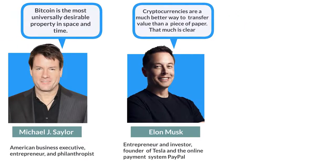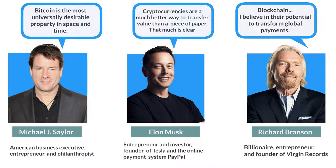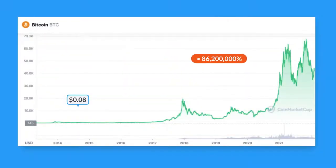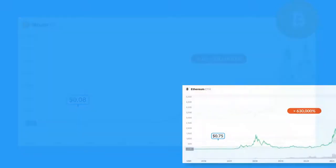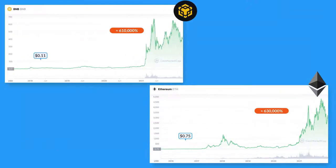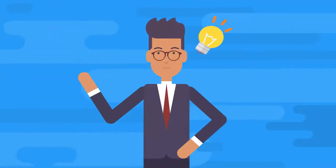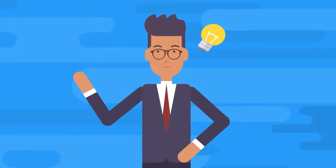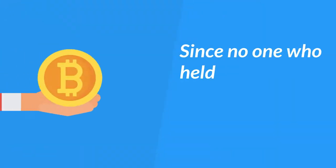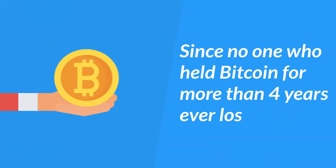Did you know that the richest people in the world own Bitcoin and other cryptocurrencies? Early adopters of cryptocurrency were able to realize gains beyond imagination. Holding cryptocurrencies for multiple years has been a great idea, since no one who held Bitcoin for more than four years ever lost money.